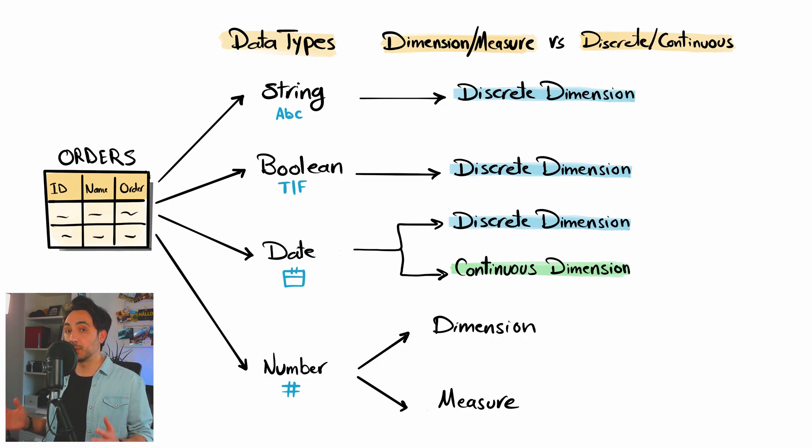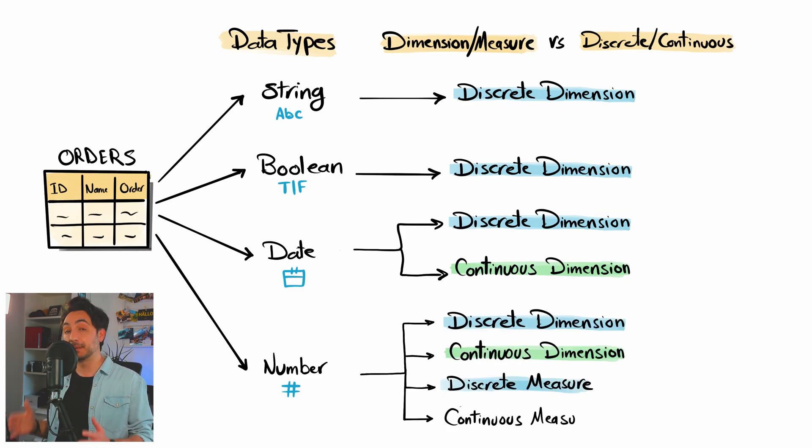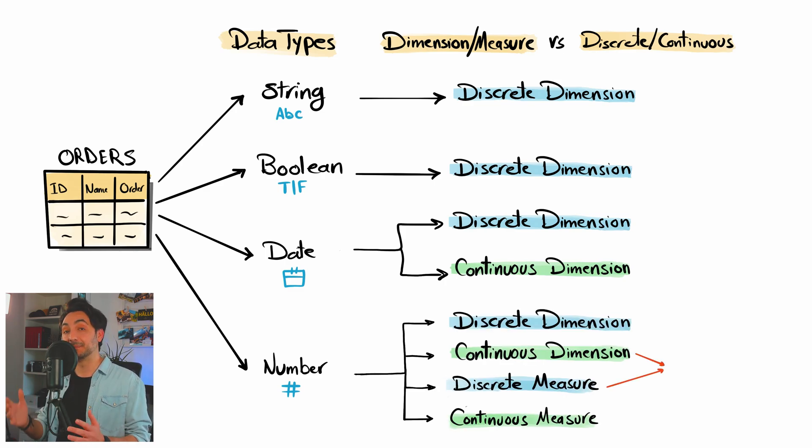And now to the last one. If we have a field with the data type number, it doesn't matter whether it's dimension or measure, we can have this field as continuous as well as discrete.